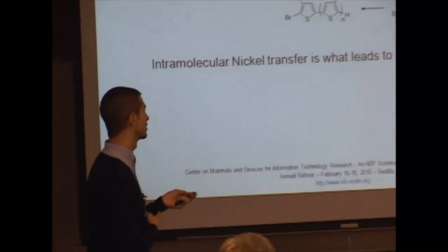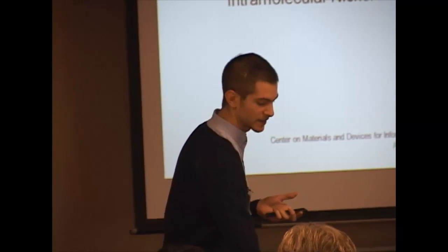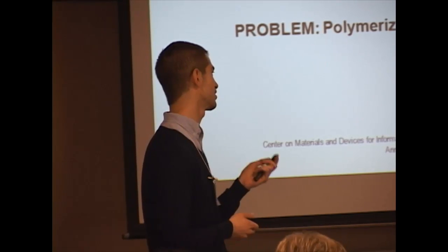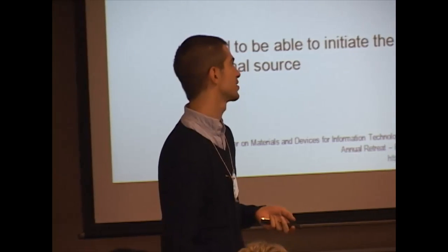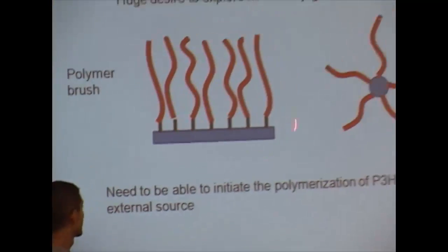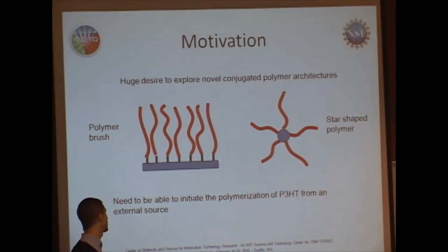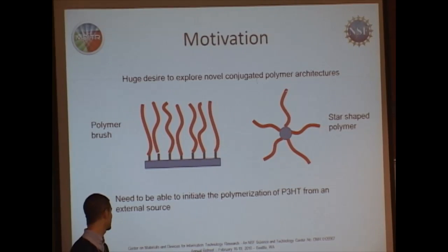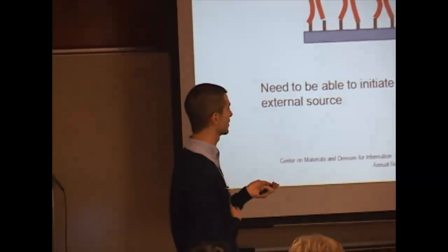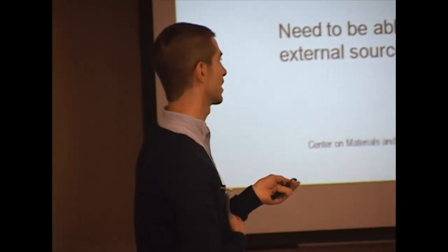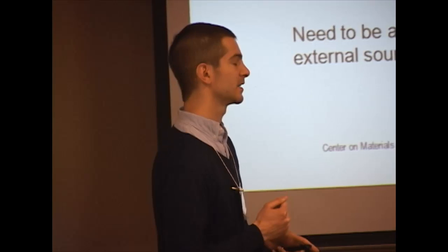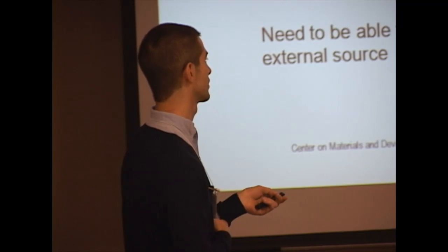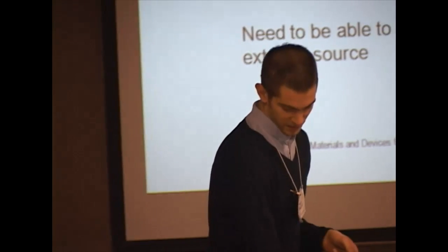The problem is that this initiating species is made in situ, so if you want any end group other than HBr, it's very difficult — you can't initiate from other sources. Our motivation is to look at other polymer architectures, such as polymer brushes or star-shaped polymers, which could have beneficial properties in FETs due to high crystallinity. To grow these, you could either make a polymer chain and attach it, but that chemistry is difficult. What we want is to graft from a surface or a core and grow a polymer chain off it.